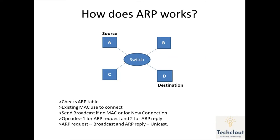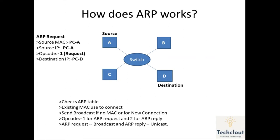In the ARP request message, the source puts its own MAC address — in our scenario that is Computer A's MAC address — then the source IP, which is Computer A's IP. The OP code is 1 because it is an ARP request. The destination IP will be Computer D's IP, and the destination MAC will be left blank. This ARP request is broadcast to the local network.